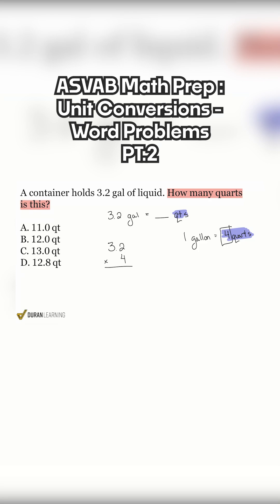And so 3.2 multiplied by four, two times four is going to be eight. Three times four is going to be 12. And then from here, we're done with the exception of really just making sure we're following those decimal rules. So we have one decimal place up top, none on the bottom. So it's still going to be one that we'll bring back. And there we go. 3.2 gallons is going to be the equivalent of 12.8 quarts.